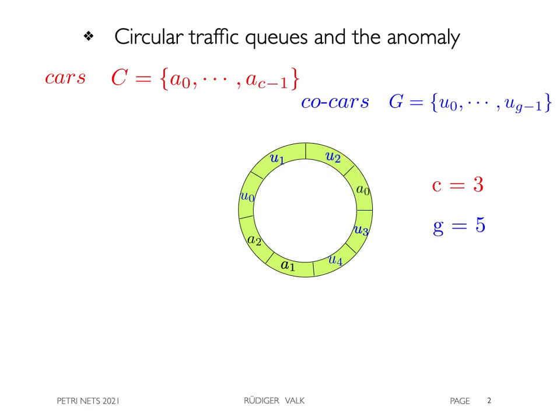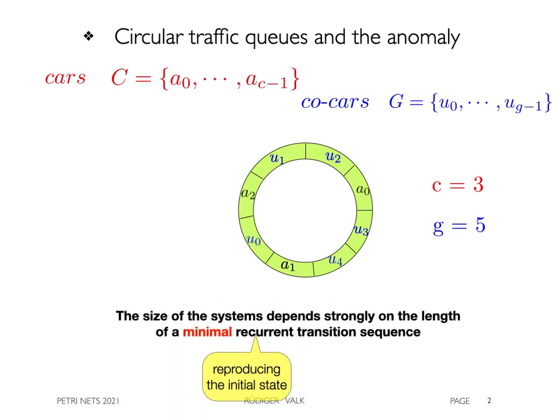They can swap their places as shown here. The size of the system strongly depends on the length of a minimal recurrent transition sequence, which is a sequence reproducing the initial state.